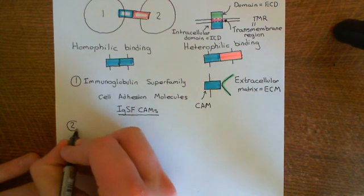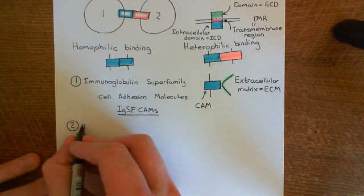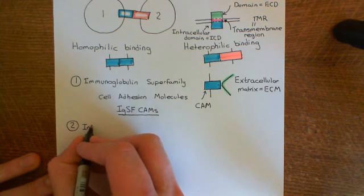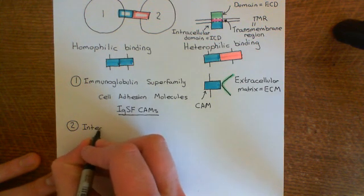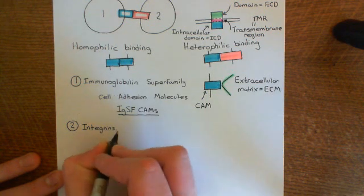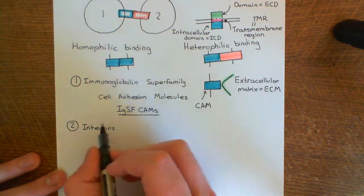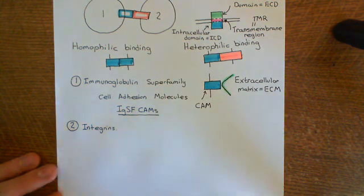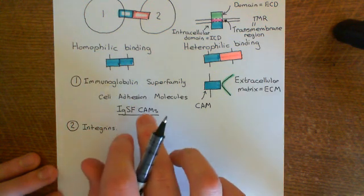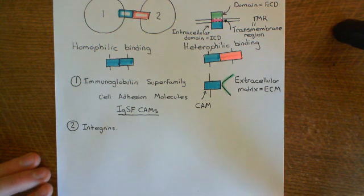Family two is the integrins. When we look at examples of the immunoglobulin superfamily cell adhesion molecules, we'll actually see that often these are involved in binding to integrins. So we will see some integrins through looking at examples of IgSF CAMs, because the thing they generally bind to is an integrin.